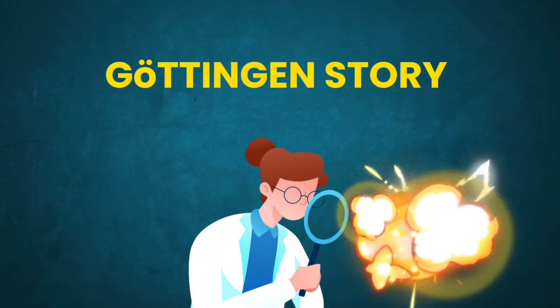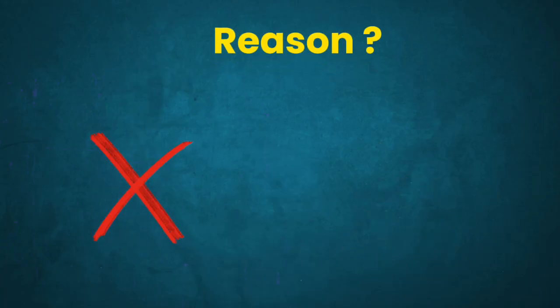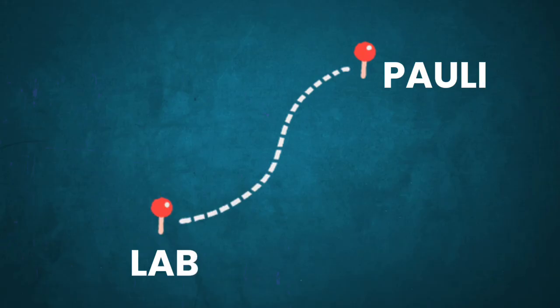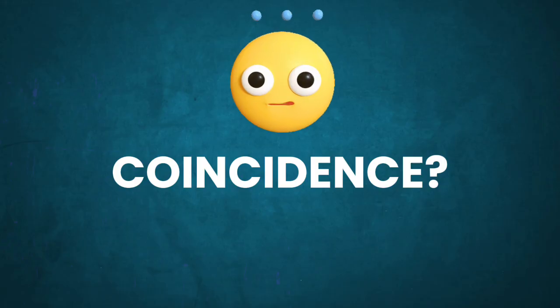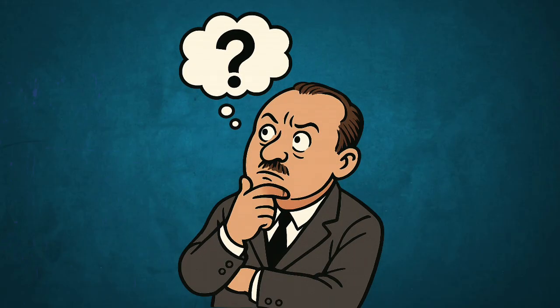One story says that in Göttingen, there happened an explosion in a major lab. Not because of any wiring error or chemical mistake, but suspiciously at the exact moment Pauli stepped off a train nearby. He wasn't even inside the lab, just near it. Maybe coincidence, but it didn't happen once, it happened again and again.